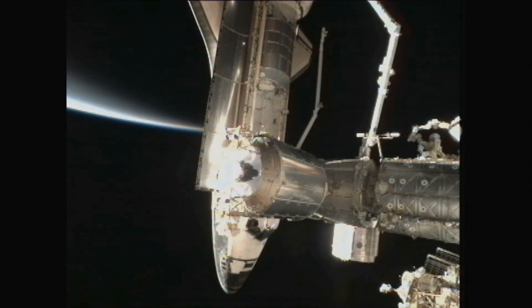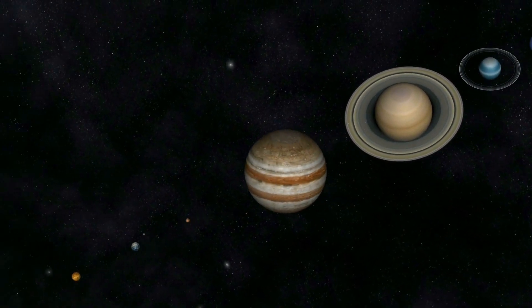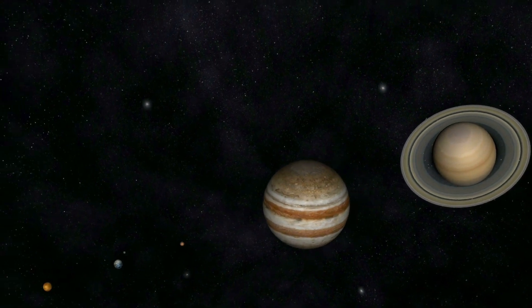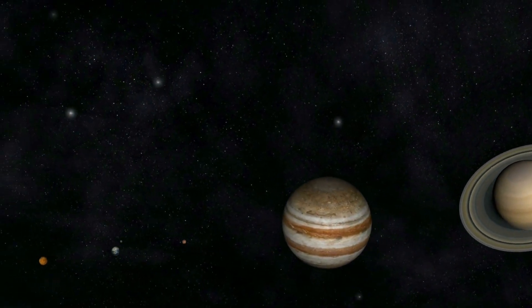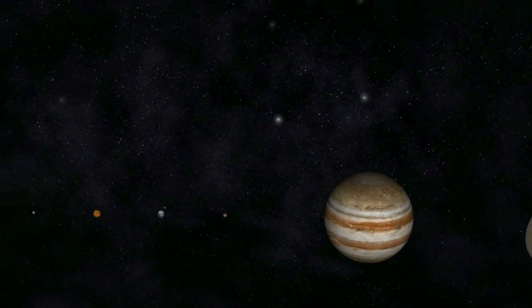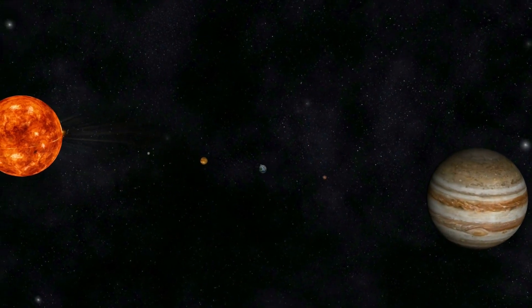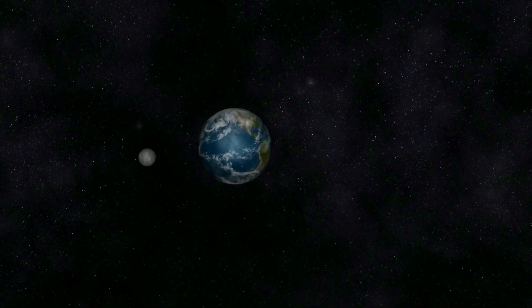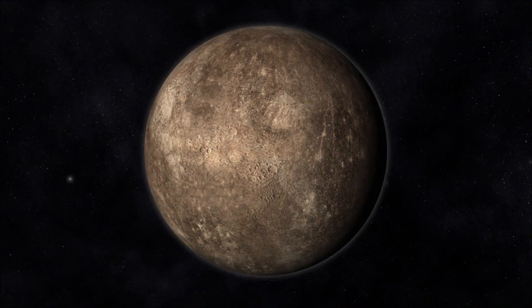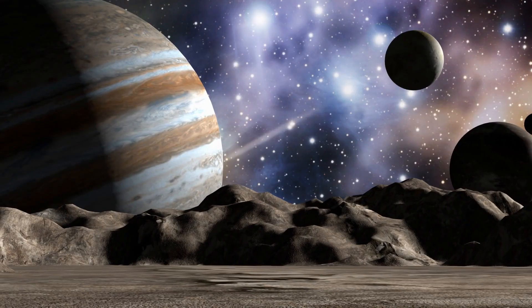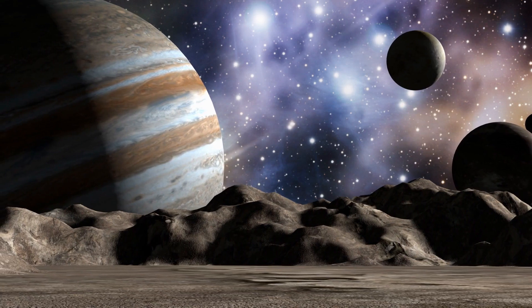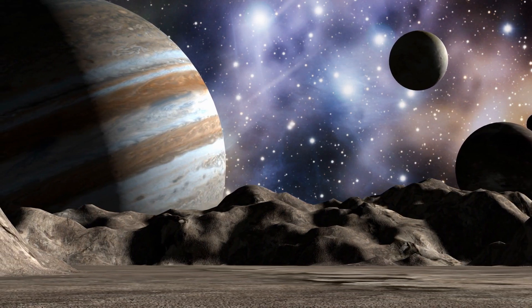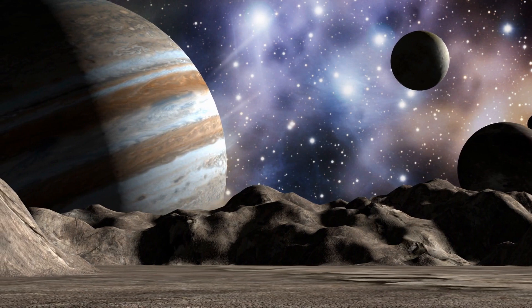Our next stop on this cosmic journey is the solar system, a collection of celestial bodies that orbit our sun. From the scorching hot surface of Mercury to the frigid icy realms of Pluto, the solar system is a diverse and fascinating place. Mercury, Venus, Earth, and Mars are the inner planets, while Jupiter, Saturn, Uranus, and Neptune are the gas giants that dominate the outer reaches.